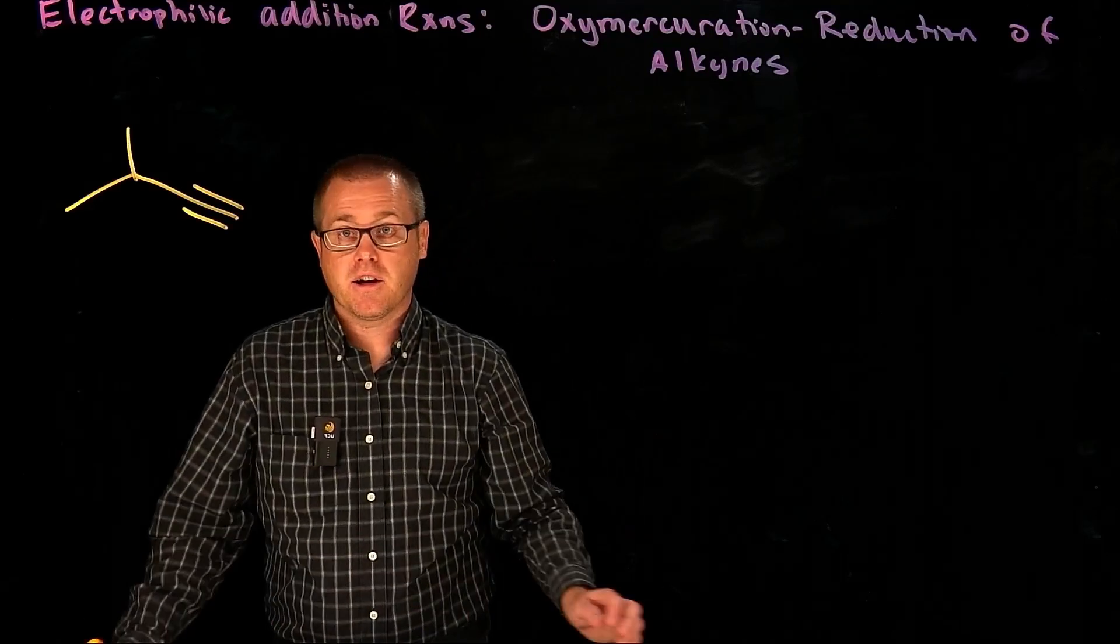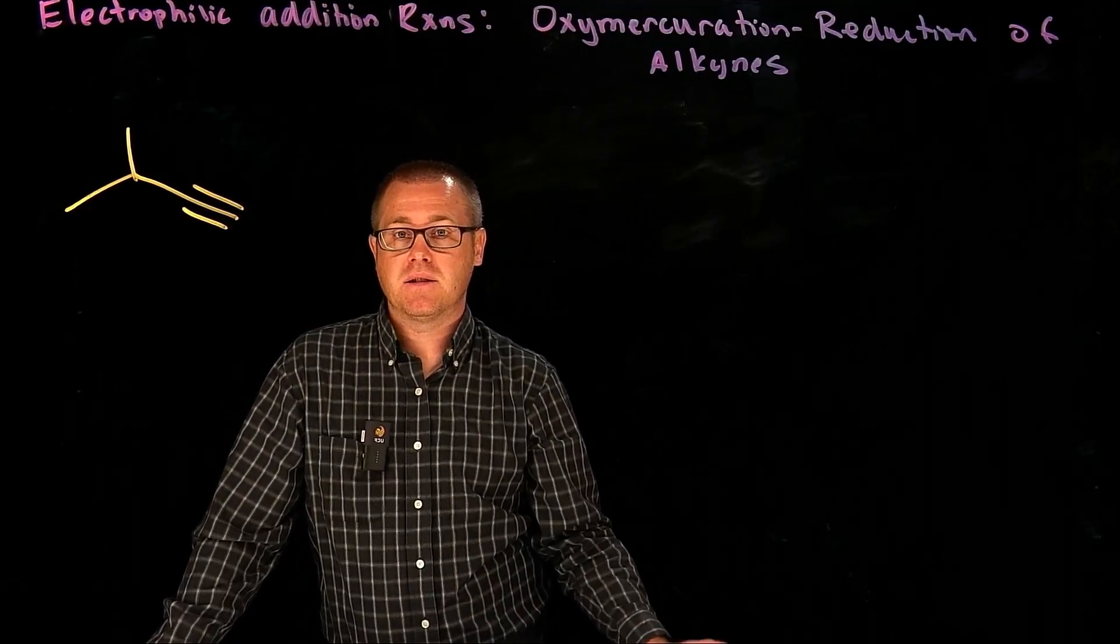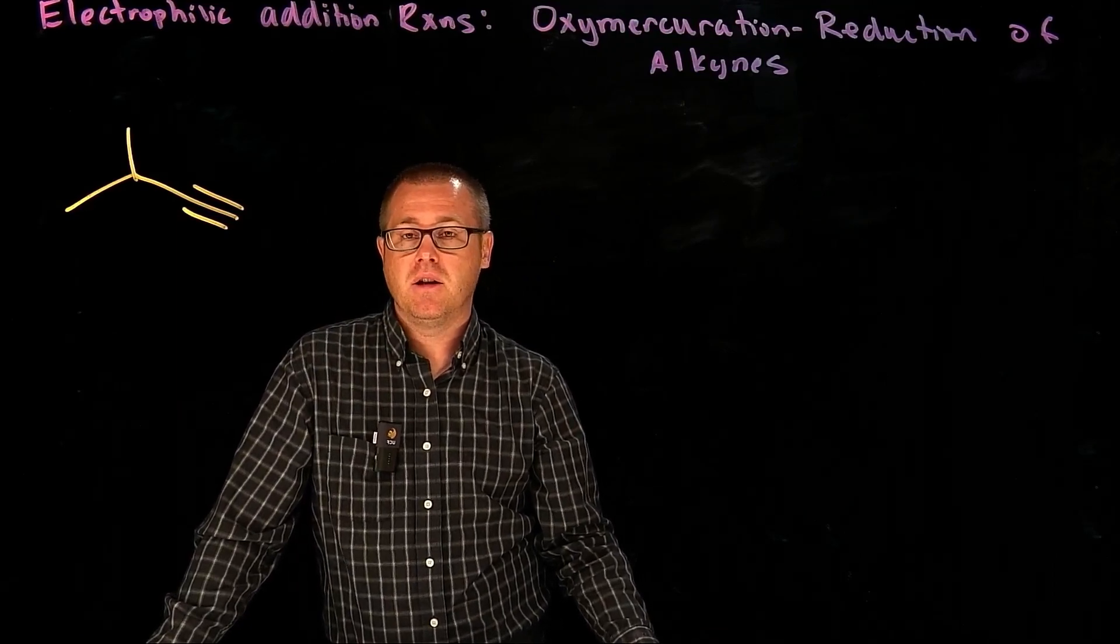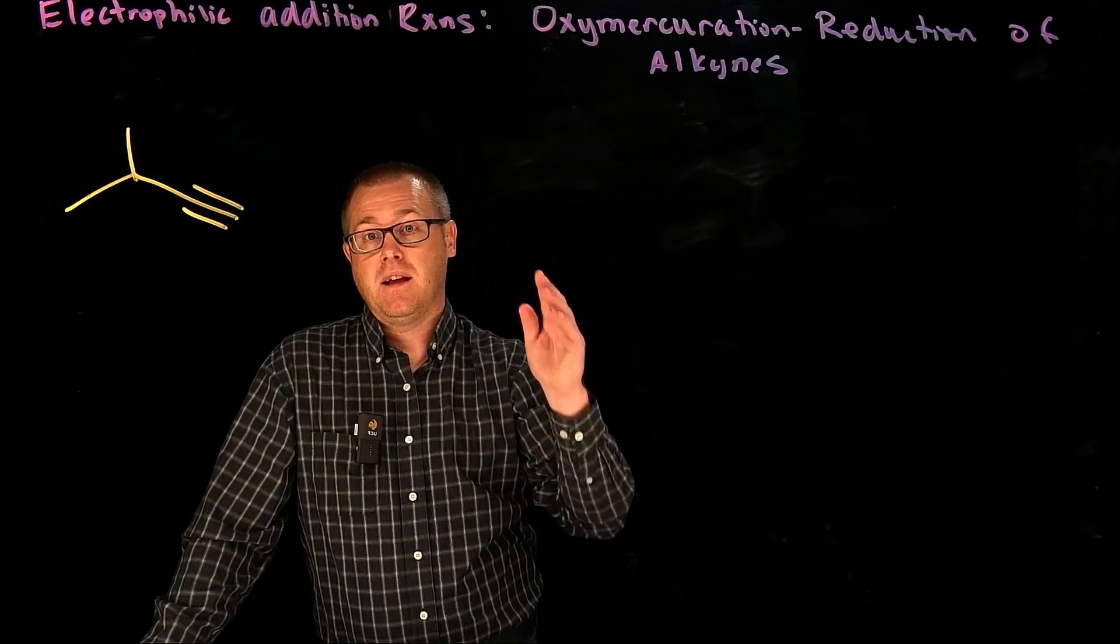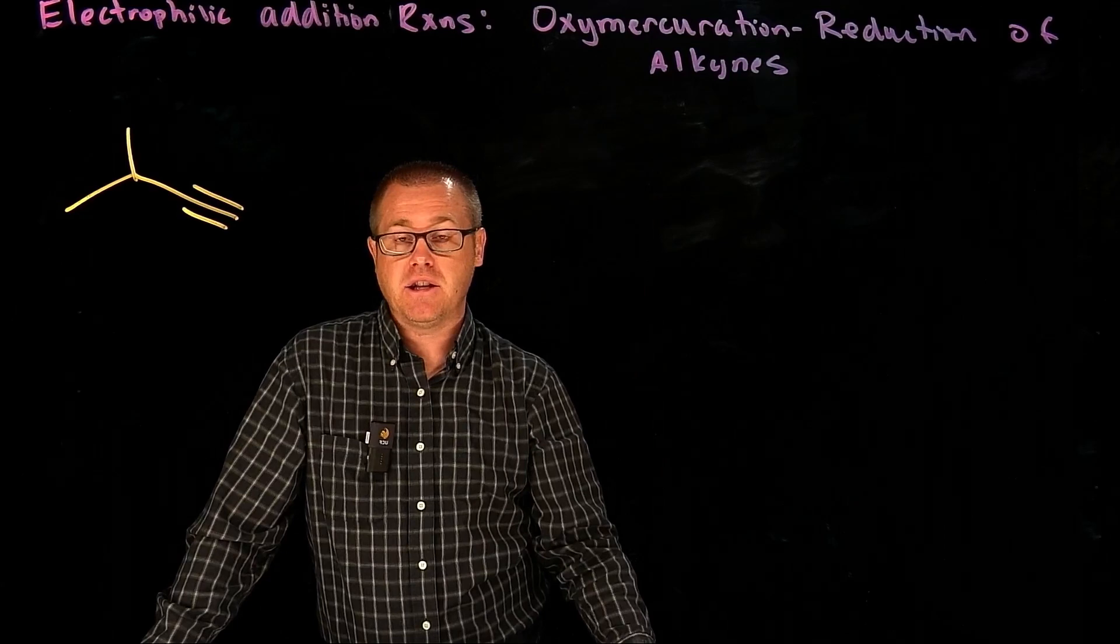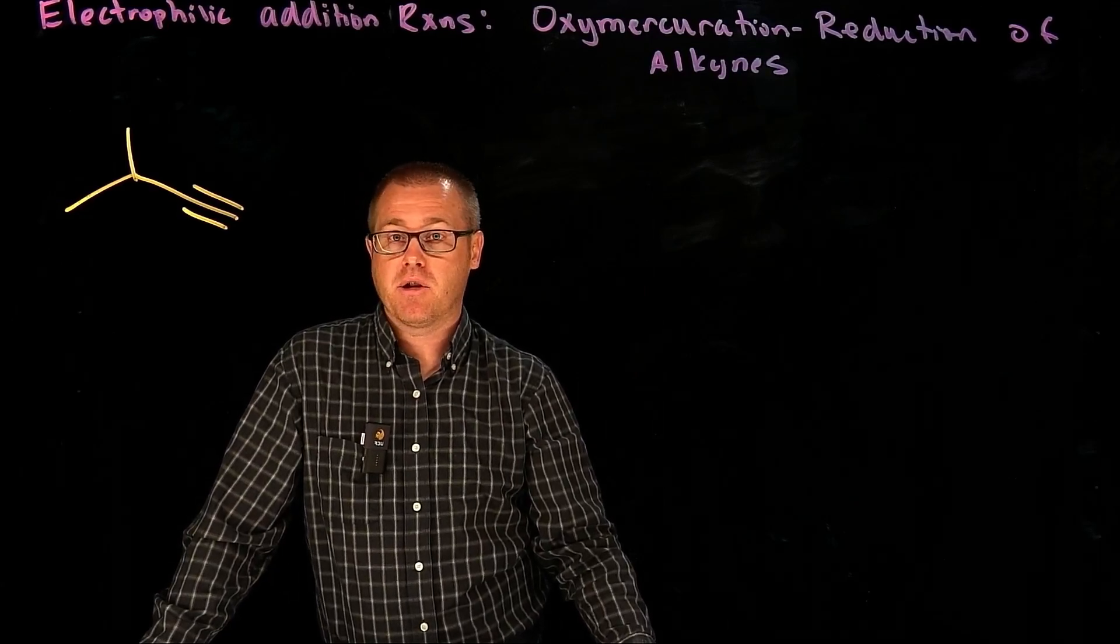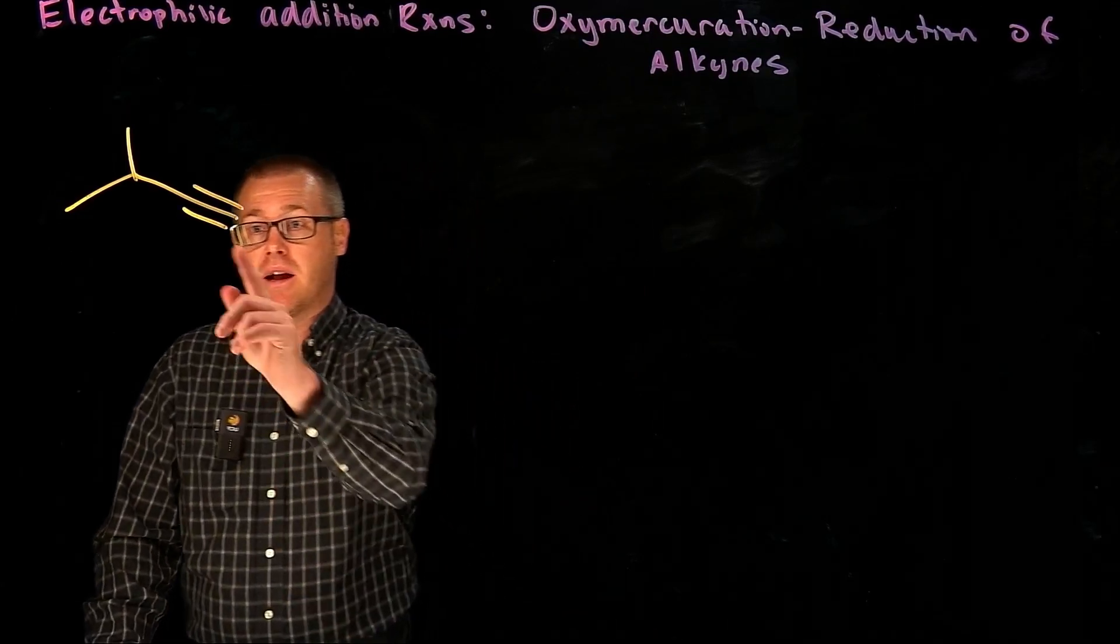So much like the oxymercuration of alkenes to generate an alcohol, you can take similar reagents and do an oxymercuration reduction to an alkyne.